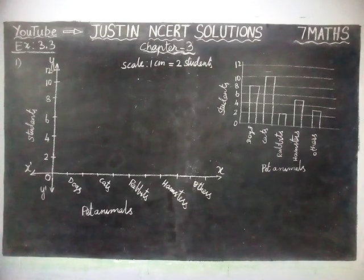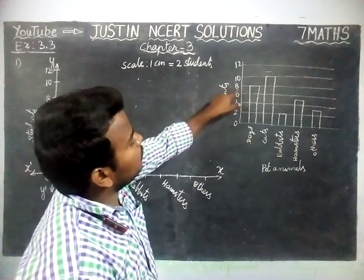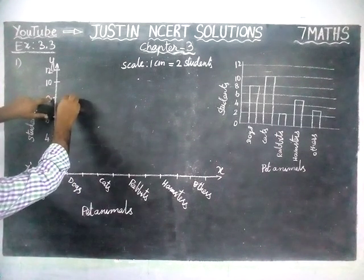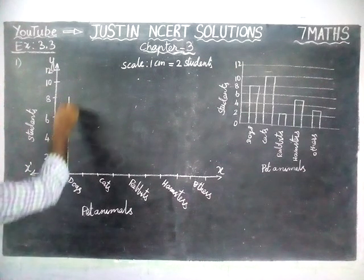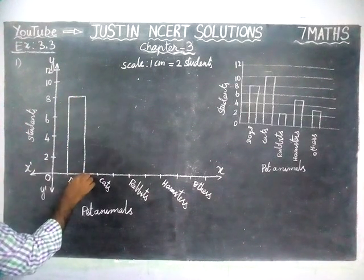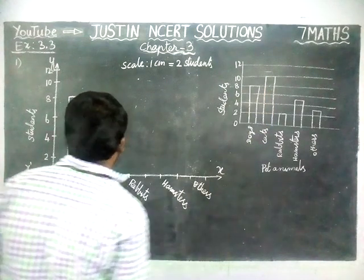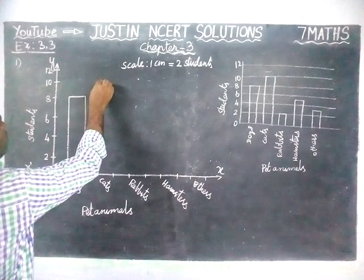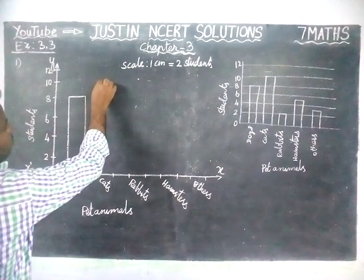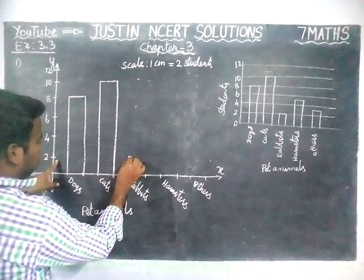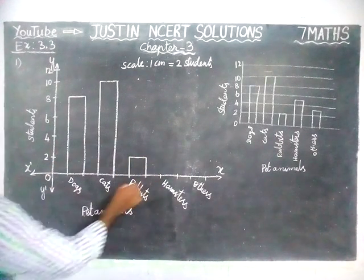Now we are going to draw the given information. The first is dogs — totally 8 students have dogs as a pet animal. Dogs is here and number 8 is in this place, so we draw the bar graph for dogs. Next, cats — totally 10 students, so 10 students have cats as a pet animal. Then rabbits — totally only 2 students have rabbit as a pet animal.